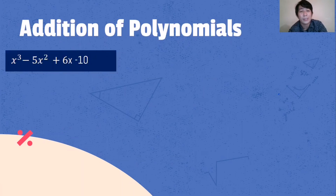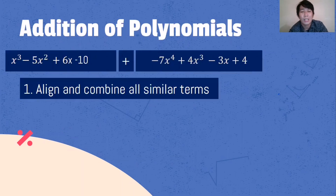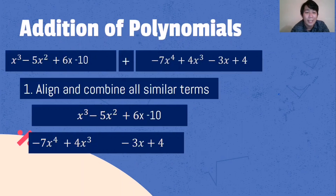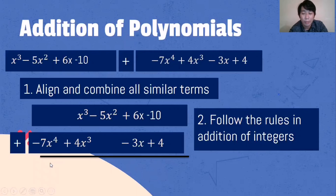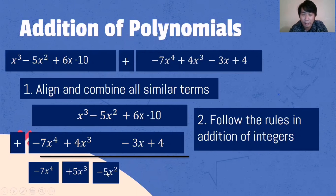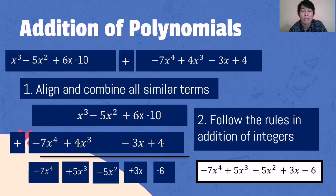Next example: x cubed minus 5x squared plus 6x minus 10, plus negative 7x⁴ plus 4x cubed minus 3x plus 4. Align and combine all similar terms — a spacer where there's no x squared on the second polynomial and no x⁴ on the first. Bring down negative 7x⁴. Then 1 plus 4 is 5x cubed. Bring down negative 5x squared. 6x plus negative 3x — subtract and follow the higher sign — is positive 3x. Negative 10 plus 4 is negative 6. Final answer: negative 7x⁴ plus 5x cubed minus 5x squared plus 3x minus 6.